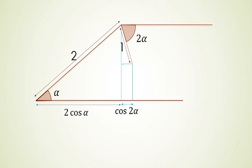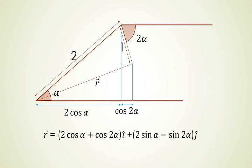Similarly, we can find our y-component. If we consider this as the position vector r⃗, then we get r⃗ = (2cos(α) + cos(2α))î + (2sin(α) - sin(2α))ĵ, where α is from 0 to 2π.